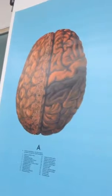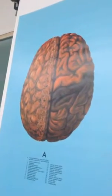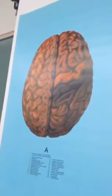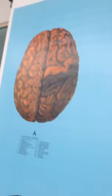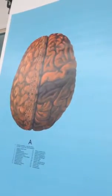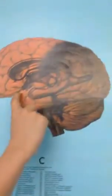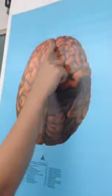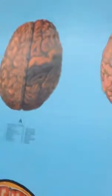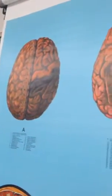The central sulcus is a groove that separates the frontal and parietal lobe. The lateral sulcus is a groove that separates the frontal and temporal lobe. The longitudinal fissure is a big groove that separates the two hemispheres. The transverse fissure separates the cerebellum.